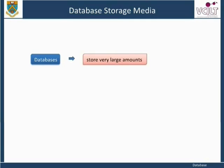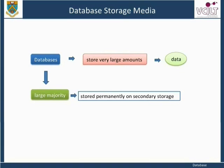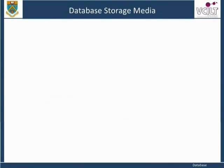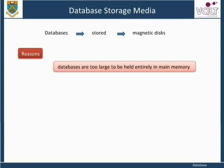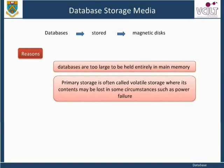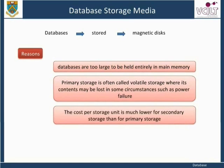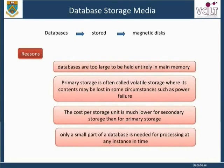Databases typically store very large amounts of data that must survive over long periods of time. A large majority of databases have to be stored permanently on secondary storage, most commonly magnetic disks, for the following reasons: databases are too large to be held entirely in main memory; primary storage is often volatile, where contents may be lost in circumstances such as power failure; the cost per storage unit is much lower for secondary storage; and only a small part of a database is needed for processing at any given time.